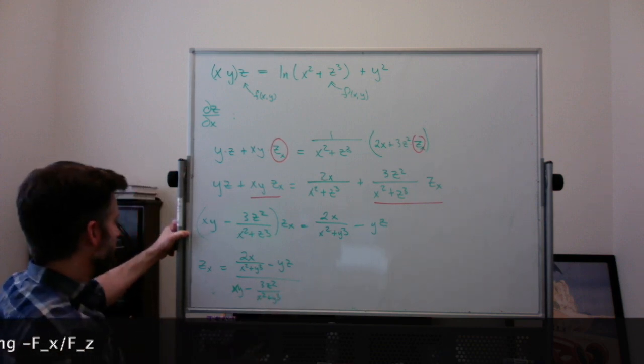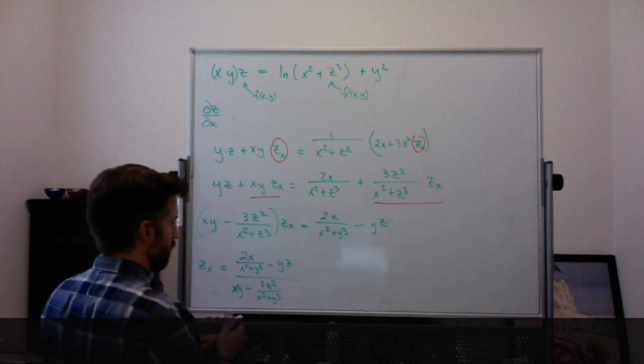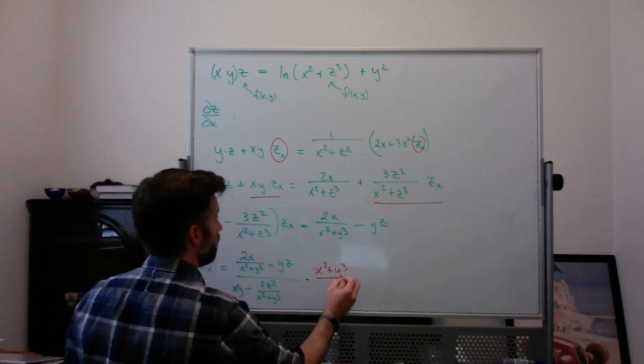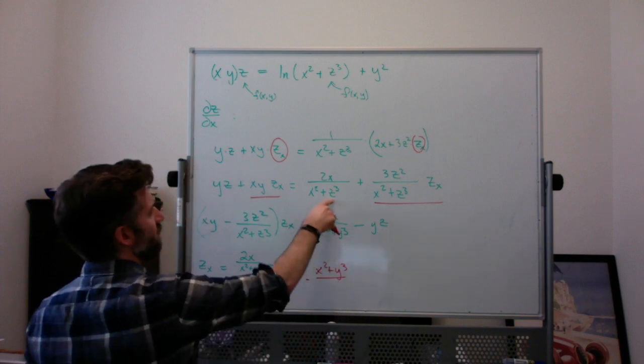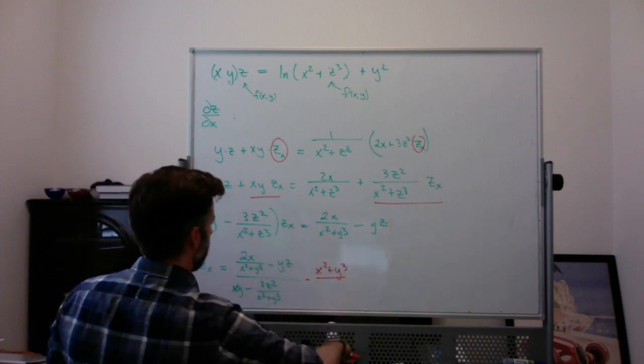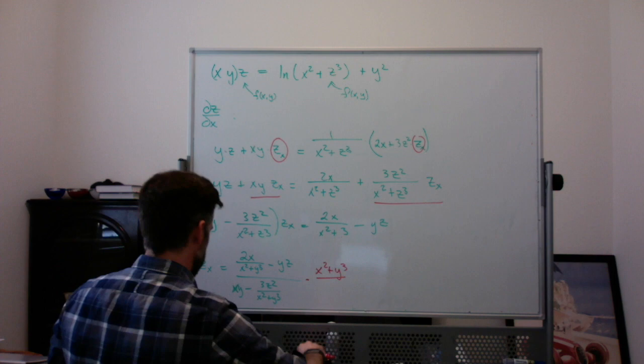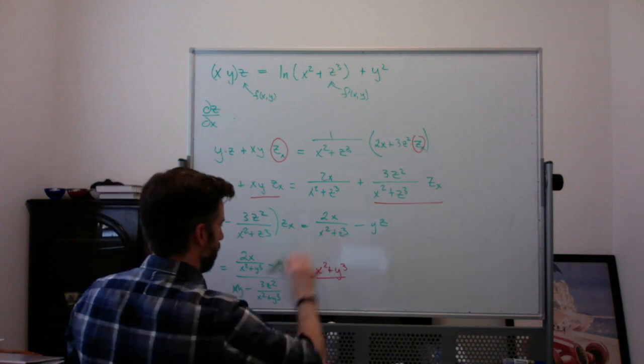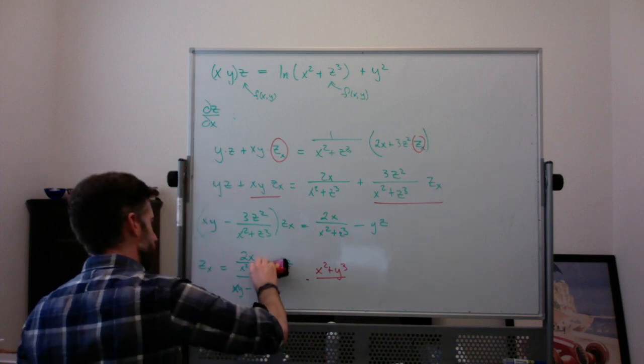So you could think like that. It's kind of nasty. You could multiply the entire top and bottom by x² + y³. My z turned into a y somehow. I'm sorry. That should be x² + z³. That's a z. Sorry. Good thing I caught that mistake.